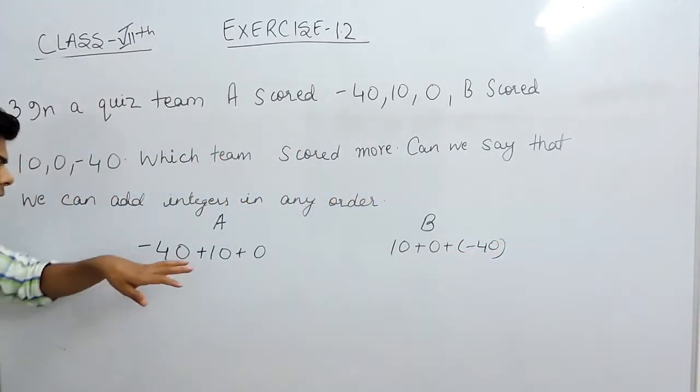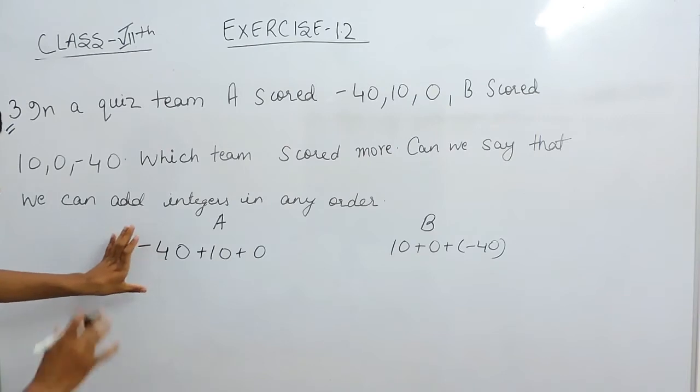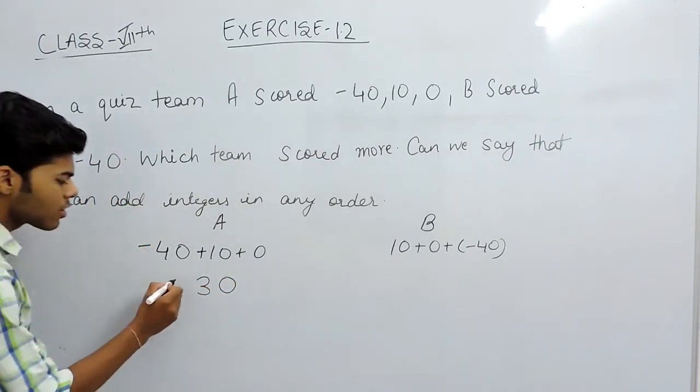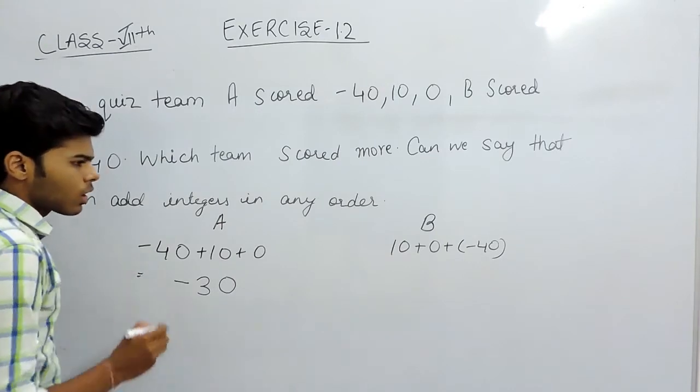That will be plus and minus. First of all we subtract the terms normally from the greater term, means 40 minus 10 is 30, and we will put the sign of the greater term, means minus. So minus 30 will be the total.